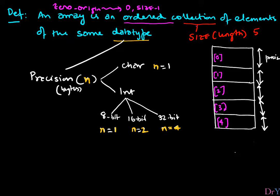Because the array is stored somewhere in memory, there will be an address associated with it. All things stored in memory have a precise address. Let's say this array is stored at location 0x2000. That's a precise definition of an array — zero-origin, size elements for the length, and precision dictated by the data type.